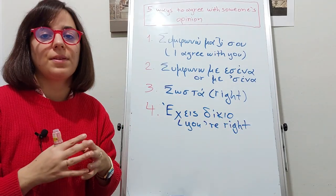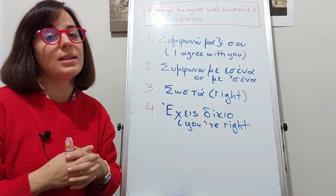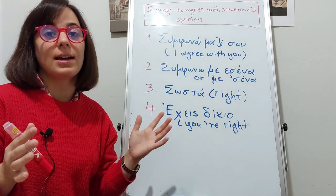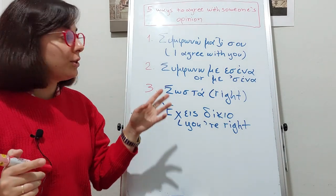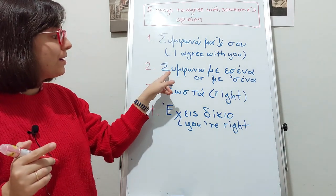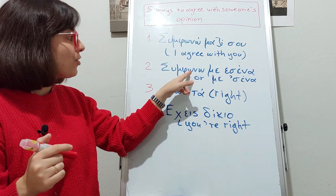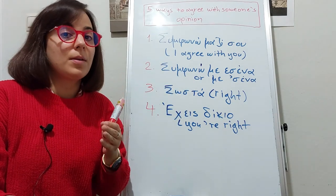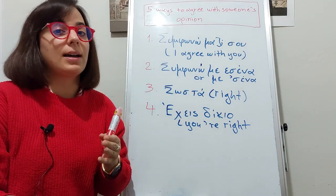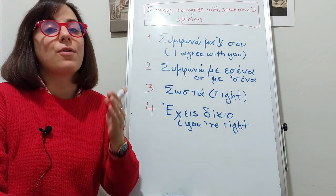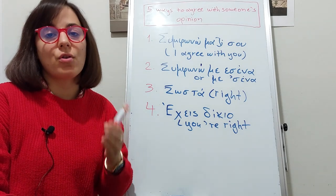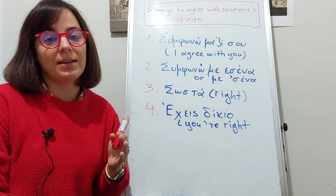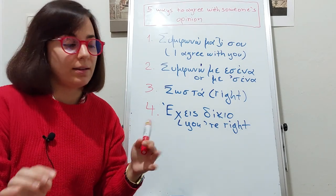The fifth and last one is to say Συμφωνώ απόλυτα. We use again the verb συμφωνώ but we add the adverb απόλυτα. Συμφωνώ απόλυτα — "Absolutely, I agree. Absolutely."